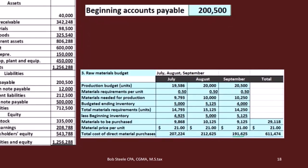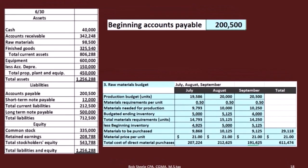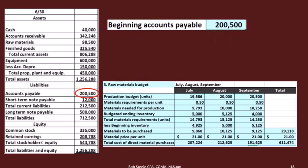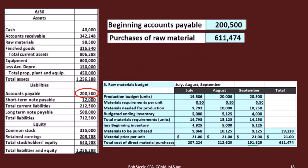In this setup we're saying that we're going to purchase everything on account and then pay for everything the following month. That means there's $200,500 that we started off with in accounts payable — that's what was in there at the end of last month and the beginning of this month. Then we had purchases of raw materials. The assumption is that we purchased all of it on account, so for the entire month we purchased $611,474 all on account, which would increase the accounts payable.